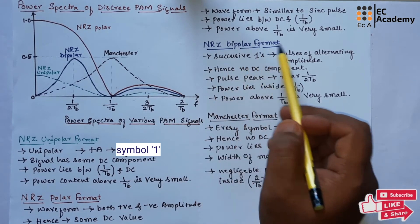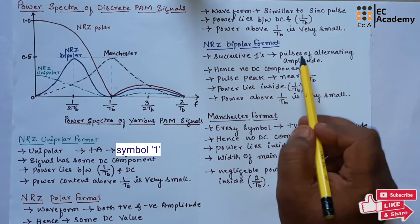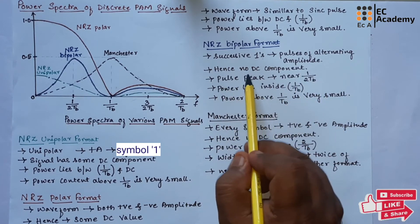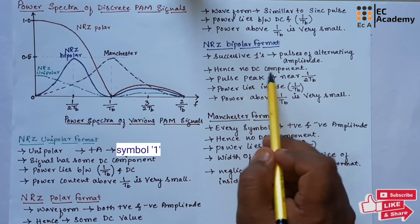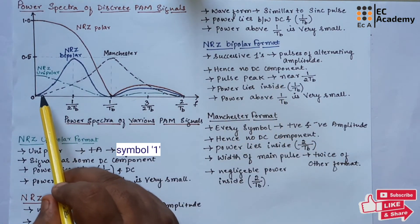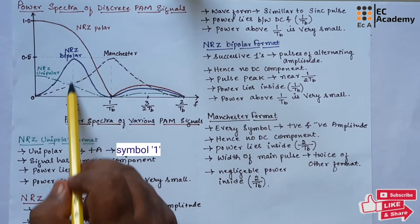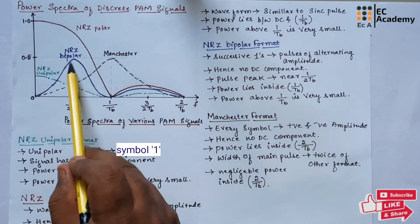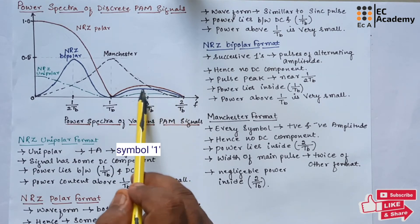Now let us understand NRZ bipolar format. In NRZ bipolar format, the successive ones are represented with pulses of alternating amplitude. Hence, there are no DC components. Since we are having pulses of alternating amplitude, there will be no DC component. If you observe the waveform, which is represented with blue color, the peak of NRZ bipolar is at the bit rate 1/(2TB). All the power will lie inside the bit rate 1/TB. Above this bit rate, the power is very small.